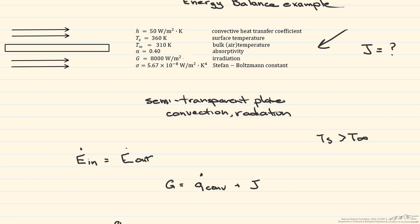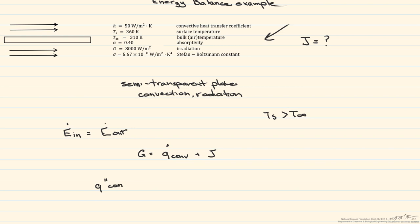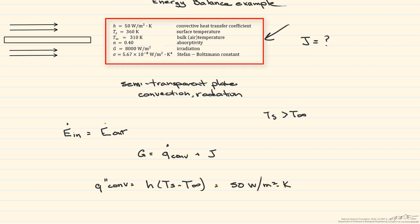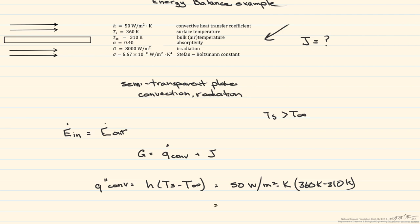First, let's find Q_convection, working in watts per meter squared. According to Newton's law of cooling, this equals the heat transfer coefficient times the change in temperature. From the given values, that is 50 W/m²·K times (360 K minus 310 K), giving Q_convection equal to 2,500 watts per meter squared.